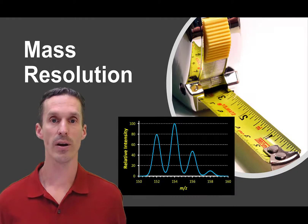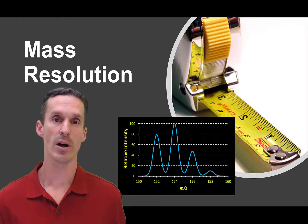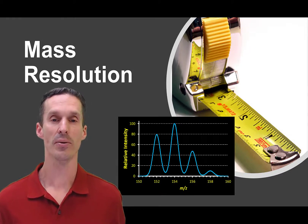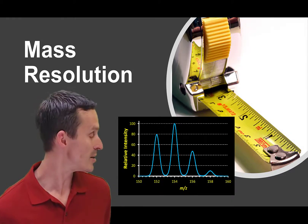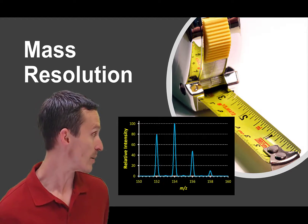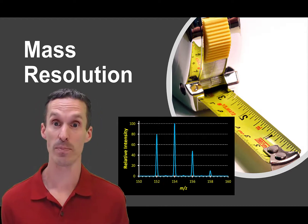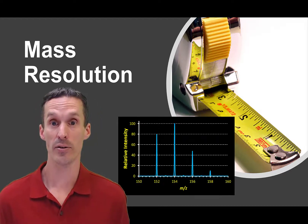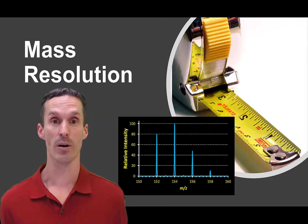Hi folks, just a quick video here. We're going to be talking about mass resolution, or in other words, why is it that some mass spectrometers record a spectrum that has broad peaks and others show up really sharp.